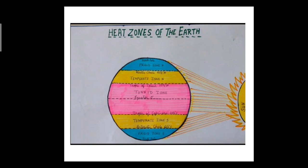As you have already studied, the earth is spherical in shape, and therefore different parts of the earth get heated differently. Based on the heat received by the sun, it is divided into three heat zones. The first is the torrid zone, the second is the temperate zone, and the third is the frigid zone.